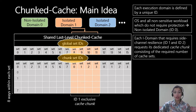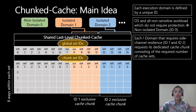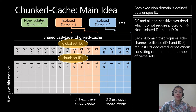Similarly, domain 2 gets allocated its own chunk of four sets from sets 12 to 15 — essentially carving out the cache resource for each domain exclusively and unshared. Besides guaranteeing side-channel resilience, this allows each isolated domain to acquire performance corresponding to its requested cache capacity without competition from other workloads. Unlike way-based partitioning schemes that provide each domain with only one or two ways within each set, chunked cache provides strict partitioning more flexibly and scalably.